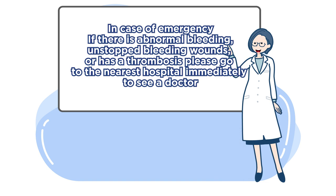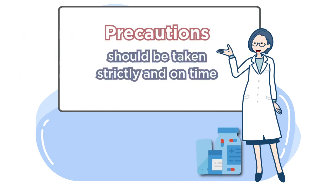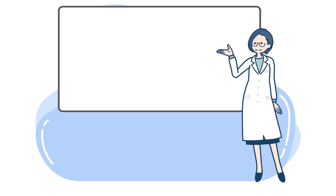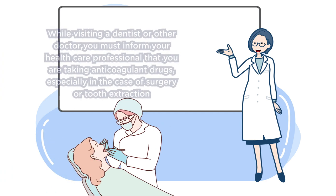In case of emergency — abnormal bleeding or thrombosis — go to the nearest hospital immediately to see a doctor. You should take the drug every day on time, because missing medication or inability to take it on time can increase the risk of both bleeding and thrombosis.